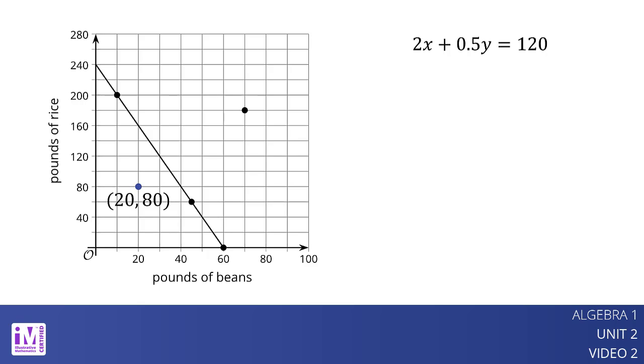The pair of values x equals 20 and y equals 80 is not a solution to the equation, because when we substitute the values into the equation, we get an equation which is not true.